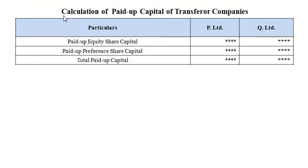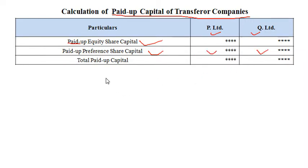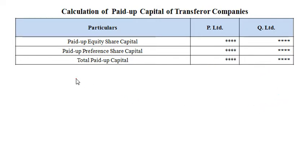In the second step, we calculate paid up share capital of the transferror company — that is paid up equity share capital of the transferror companies, for example P Limited and Q Limited, and paid up preference share capital of P Limited and Q Limited. The total paid up share capital figures will be readily available to us in the given balance sheets of the transferror companies.